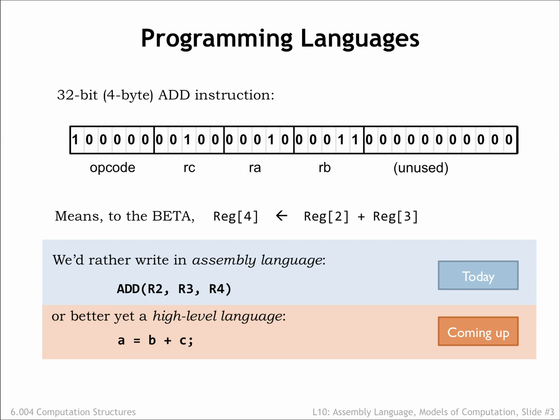We could write an interpreter for, say, Python in C, and then write our application programs in Python. Nowadays, programmers often choose the programming language that's most suitable for expressing their computations, then, after perhaps many layers of translation, come up with a sequence of instructions that the beta can actually execute.